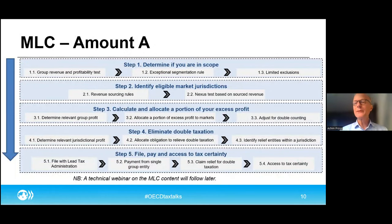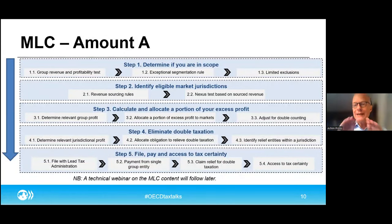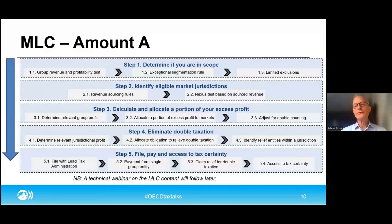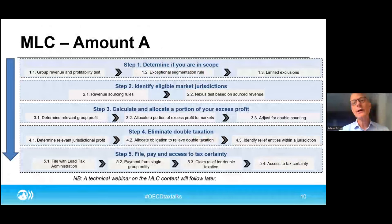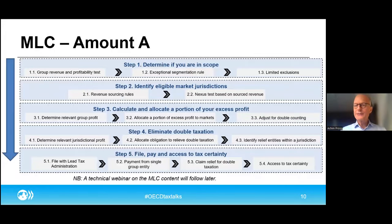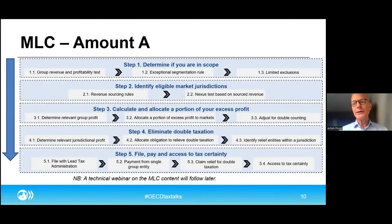There's an exceptional segmentation rule: if there's a very large segment that on a standalone basis would be in scope, you're not out of scope because the average profitability of the larger firm is lower. And then there are exclusions — for extractives, which is an important part for many of our developing country members, so that the economic rent from extractives stays in the country where it's dug out of the earth. But there are also others: regulated financial services, defense businesses. There's also a domestic business exemption for purely domestic business, so that revenue and residual profit is not allocated around the world. And in all of those features, there's a tax certainty process because we designed the process together with the rules.